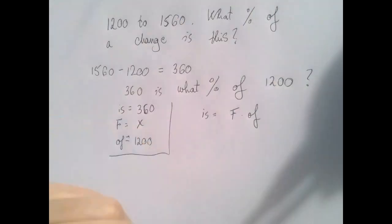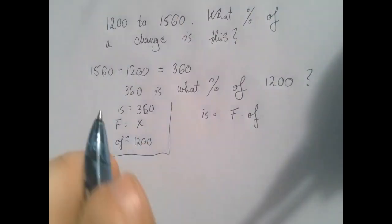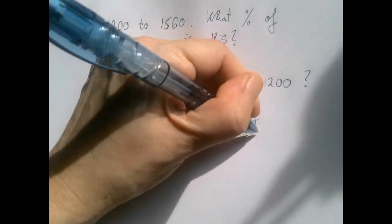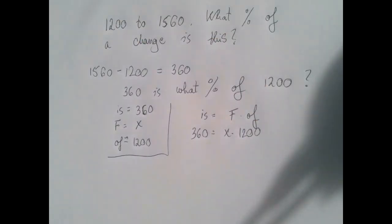As always, 'is' is fraction times 'of'. And so the 'is' number is 360. The fraction is x, and the 'of' number is 1200. And so we have, again, a one-step equation to solve for x. We will divide both sides by 1200.